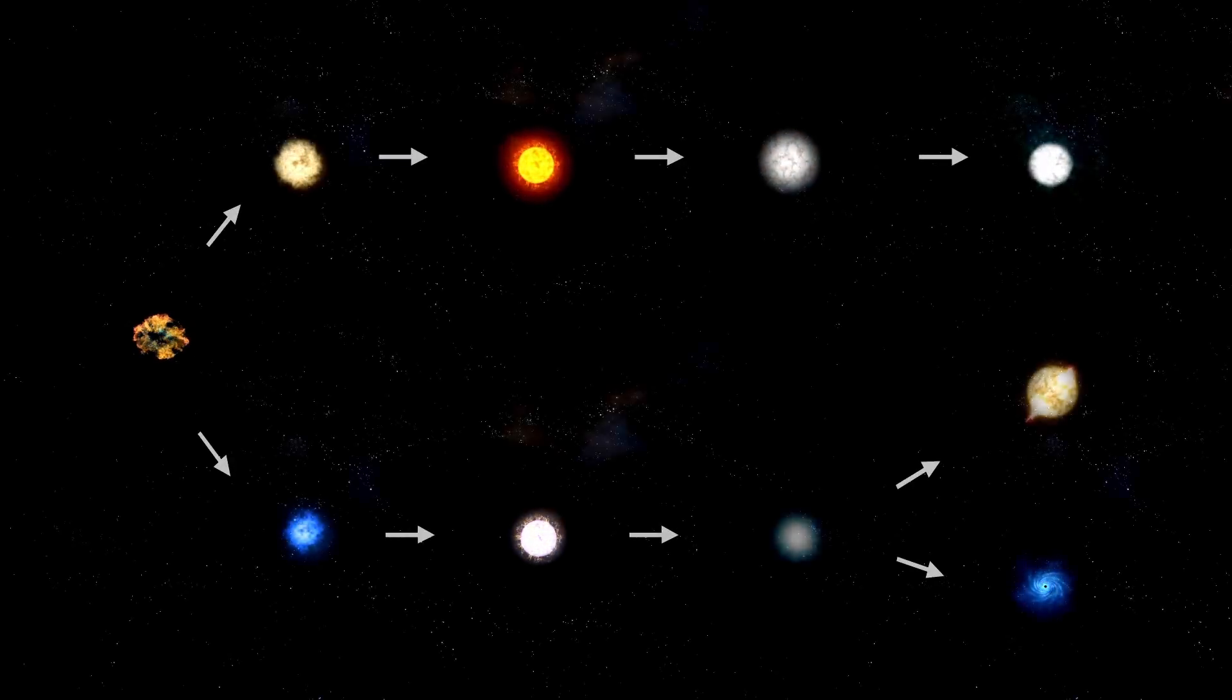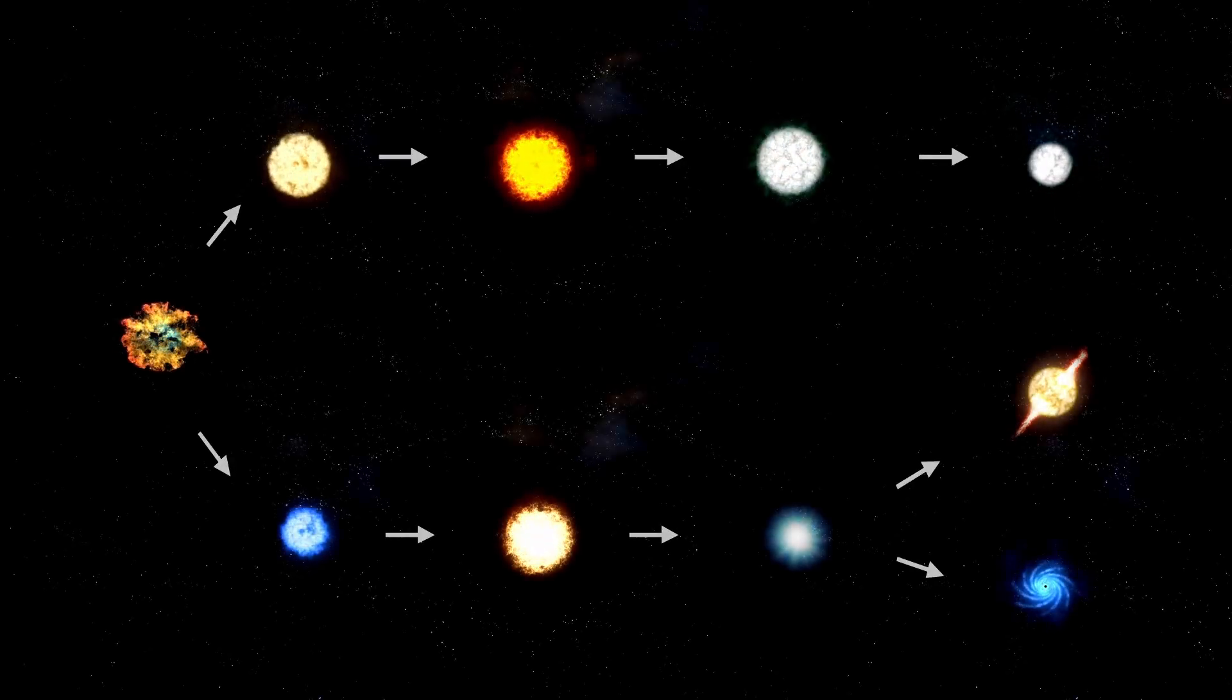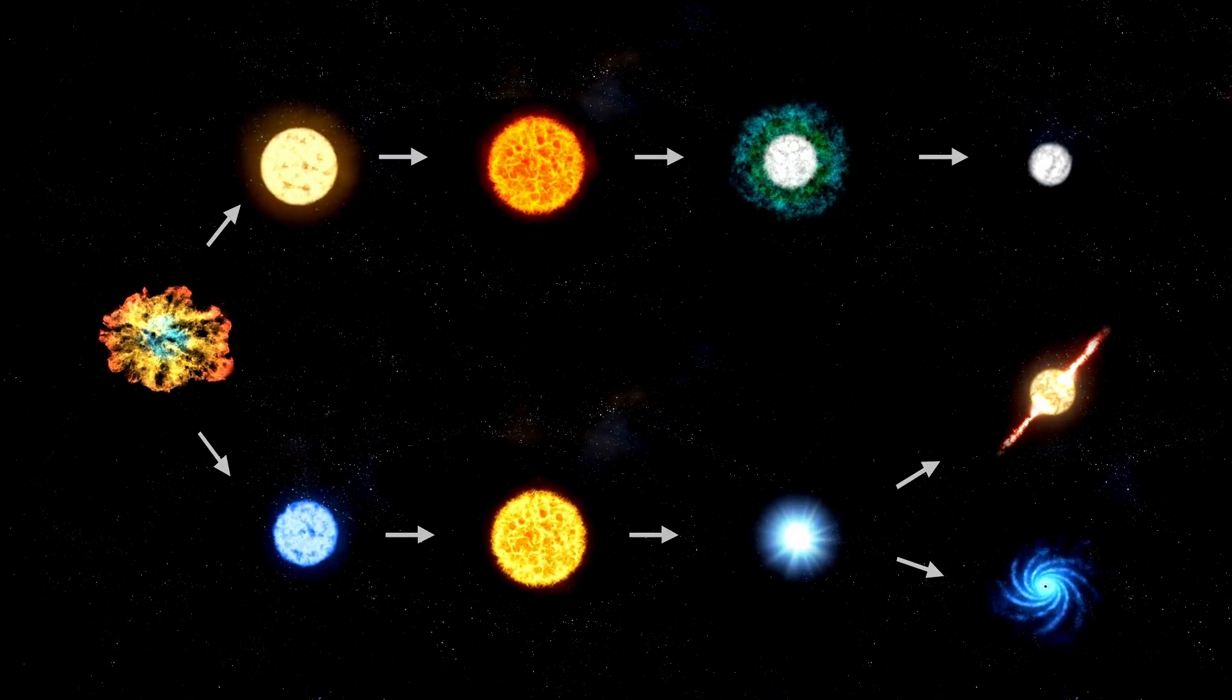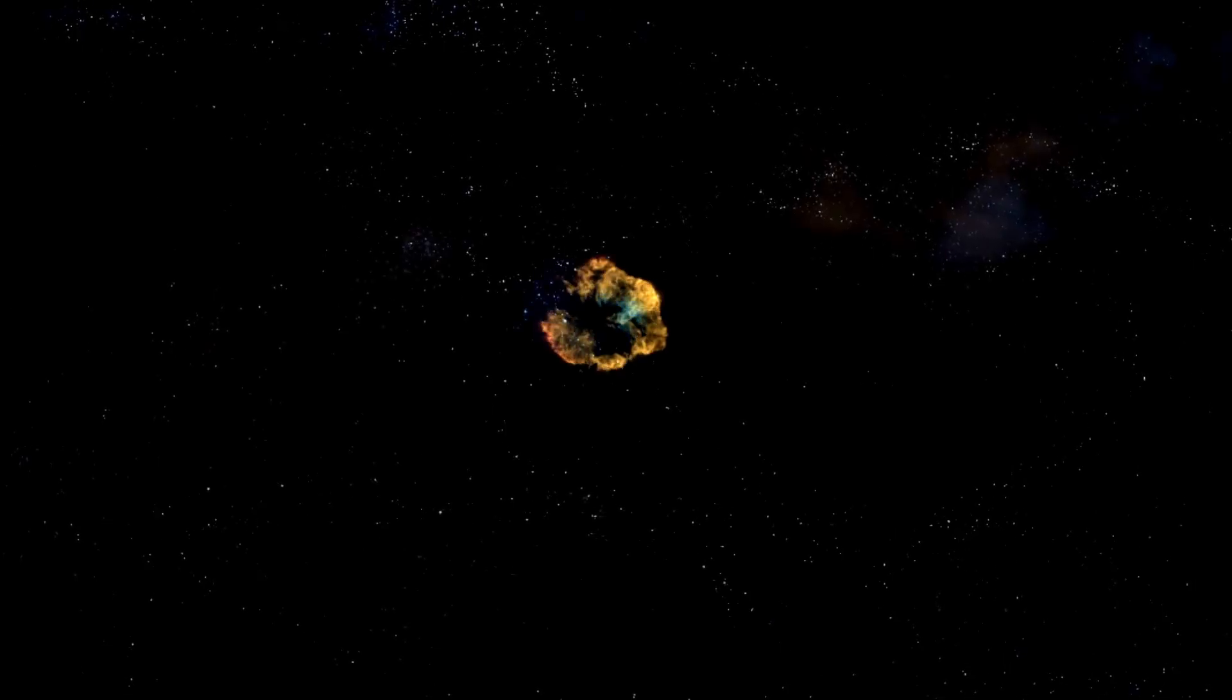First, the thermal readings. Unlike comets or asteroids, which typically emit heat in random bursts as ice sublimates and surface materials react to solar radiation, 3i Atlas showed a consistent, rhythmic pattern of heat emission, like a signal. Not chaotic, not random, but pulsed, measured.